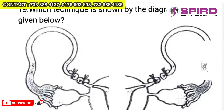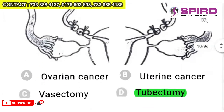Question 19: which technique is shown in the diagram? The diagram shows female organs, so it is not vasectomy. It is tubectomy — 'tube' refers to the fallopian tube, and 'ectomy' means cutting. They cut the tube, change direction, and ligate it. So this is called tubectomy.